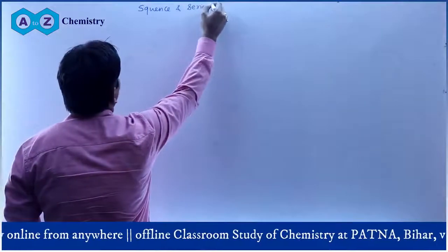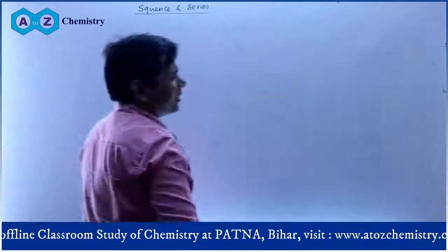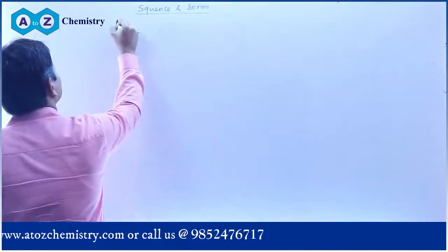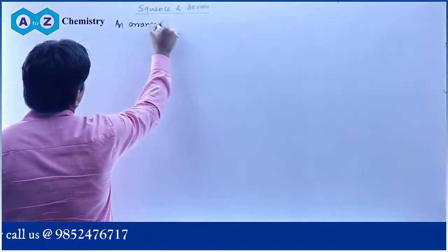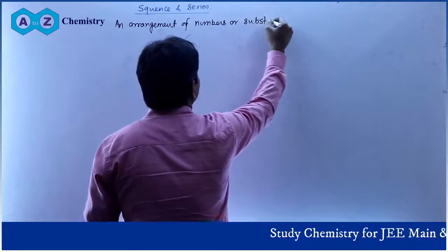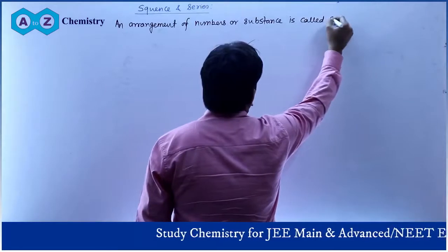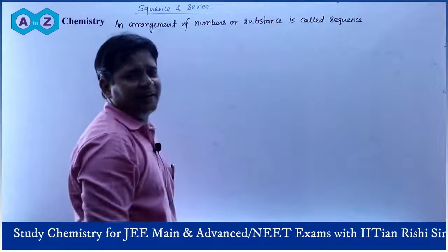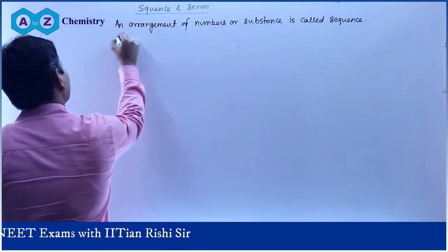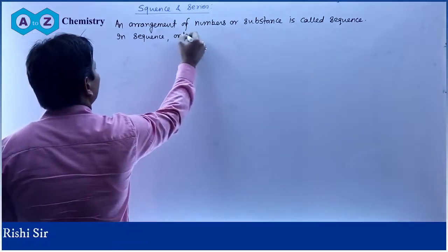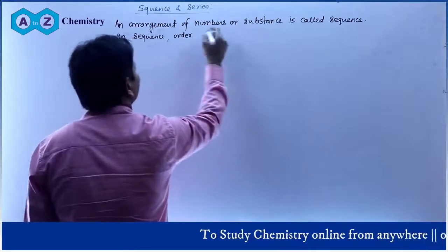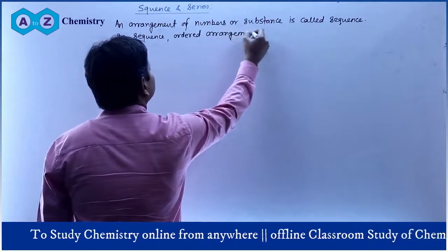First of all, a sequence is a simple arrangement. Arrangement of numbers and substance is called a sequence. In a sequence, order is not required — an ordered arrangement is not required.